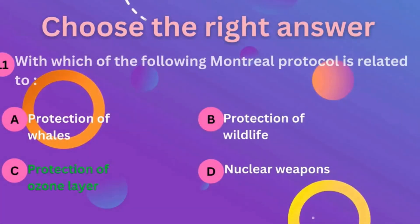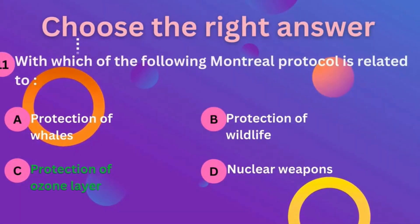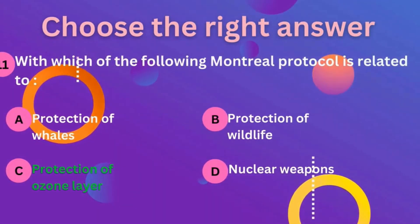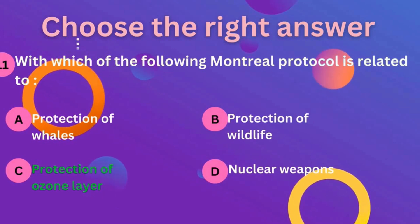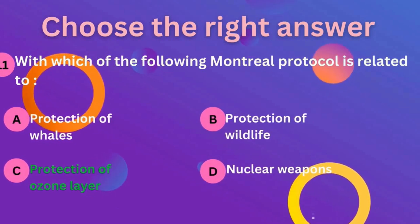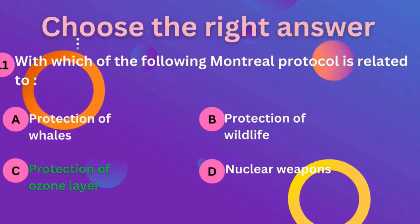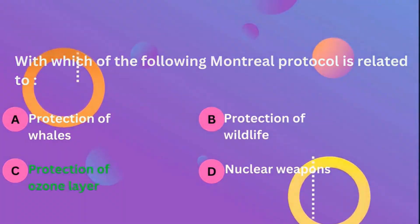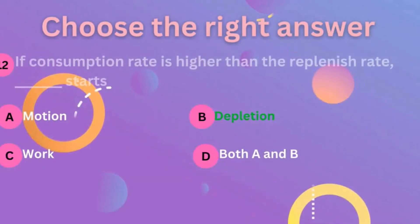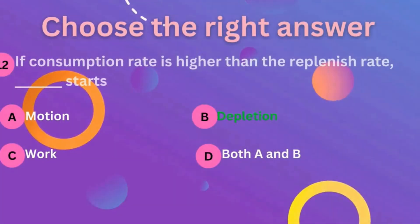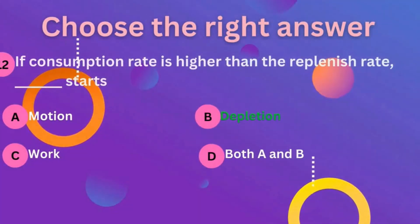Question number 11: with which of the following is the Montreal Protocol related? The correct answer is C — protection of the ozone layer.